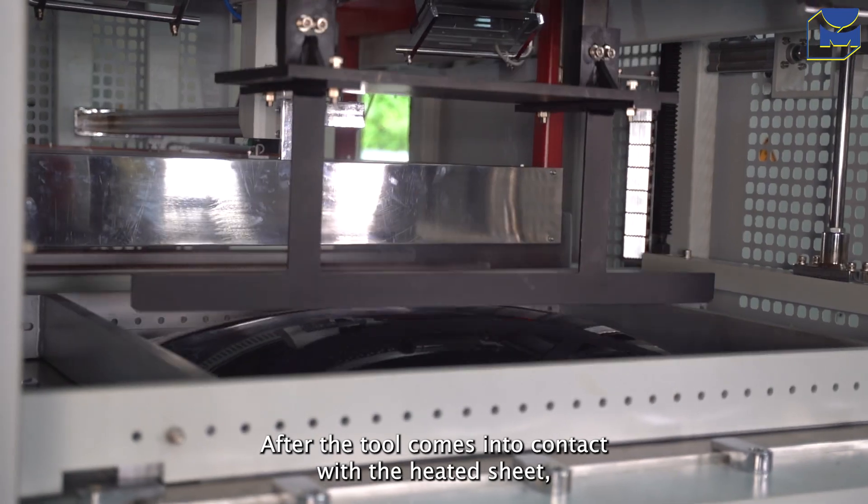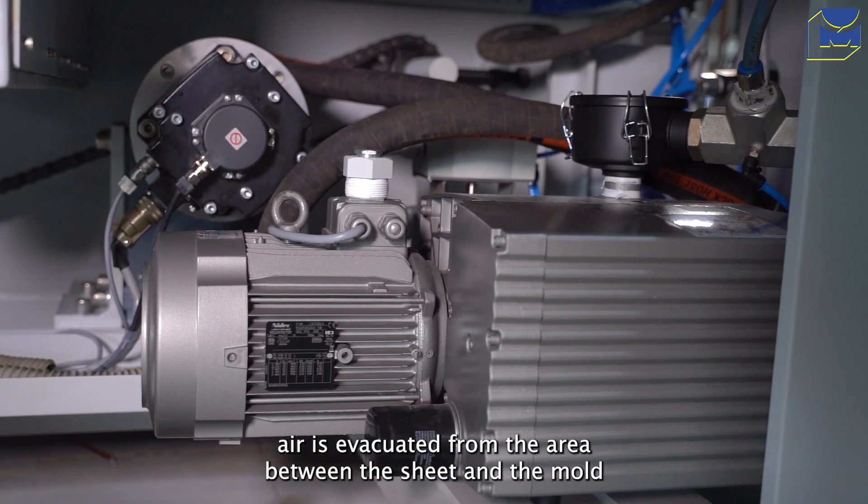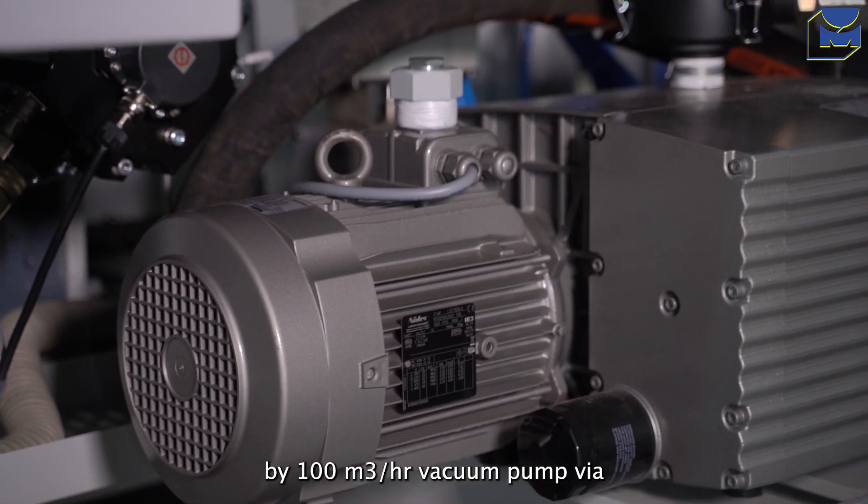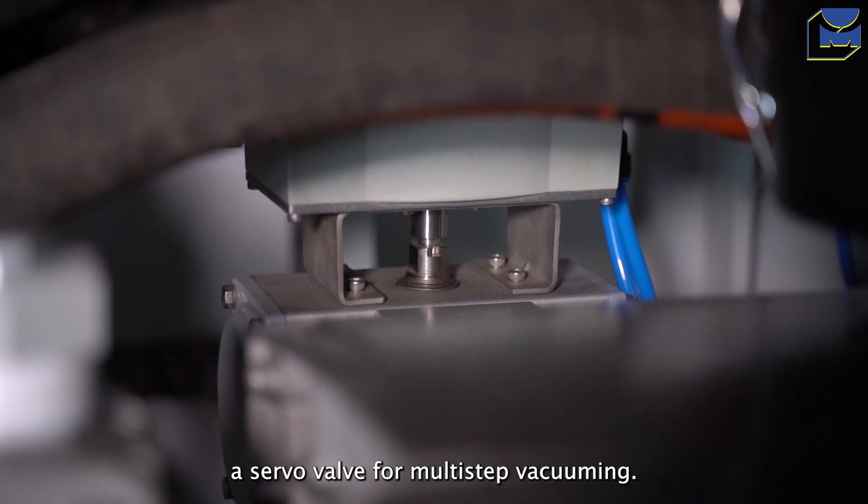After the tool comes into contact with the heated sheet, air is evacuated from the area between the sheet and the mold by a 100 cubic meter per hour vacuum pump via a servo valve for multi-step vacuuming.